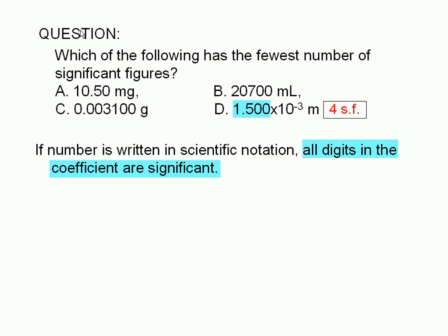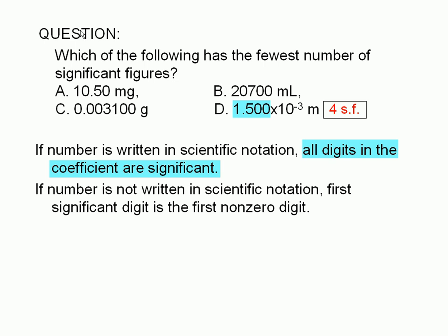Let's take a look at the other choices, which are not written in scientific notation. In these cases, the first significant digit is the first non-zero digit, that is, the leftmost non-zero digit. For choice A, the first significant digit is 1. For choice B, the first significant digit is 2. And for choice C, the first significant digit is 3.